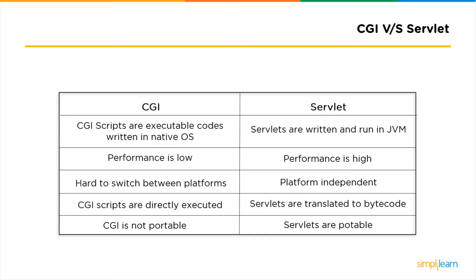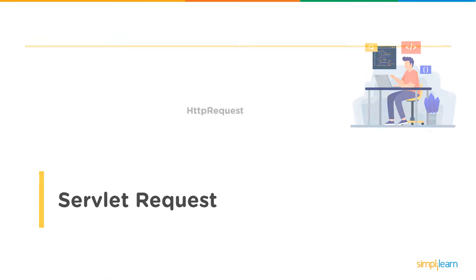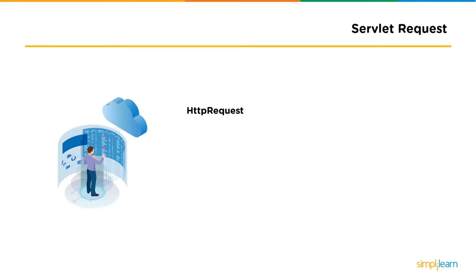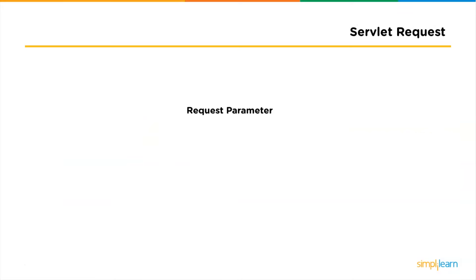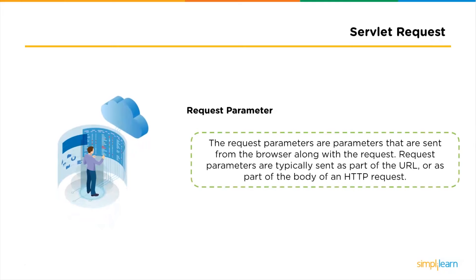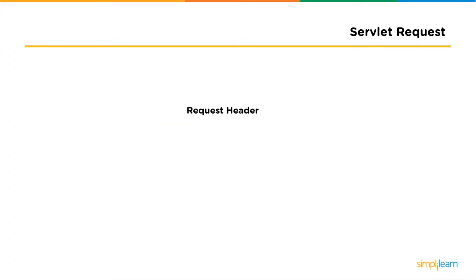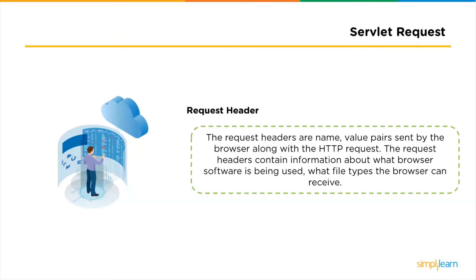Now let us understand Java servlet requests and responses. In the request phase, the first type is the HTTP request — the HTTP object represents the HTTP request sent by a browser to the web application, so anything the browser sends is accessible through the HTTP request. Next, the request parameters are sent from the web browser along with the request, either as part of the URL or as part of the body of an HTTP request. The request headers are name-value pairs sent by the browser along with the HTTP request, containing information about the browser software, what types of files it can receive, etc.